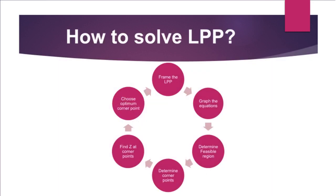These are the steps to solve an LPP. Firstly, we frame the LPP. Then, we graph the equations. Then, from the graph, we determine the feasible region and the corner points. Next, we find the objective function Z at corner points. Finally, we select the optimum corner point.